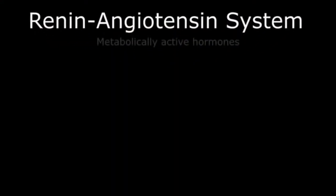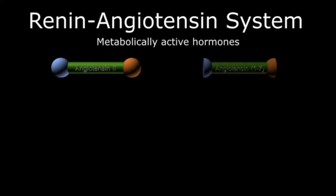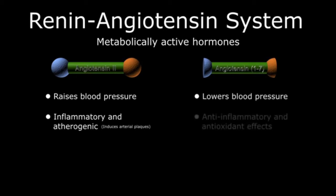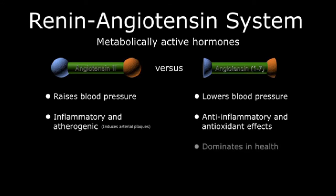The two dominant active hormone configurations in the renin-angiotensin system are angiotensin-2 and angiotensin-1-7. Angiotensin-2 raises blood pressure in response to limited renal blood flow and has inflammatory and atherogenic properties, causing plaques to form in vessels. Angiotensin-1-7, on the other hand, lowers blood pressure and has anti-inflammatory and antioxidant effects, reducing atherosclerotic disease. These two hormones are in direct competition, with the dominant species likely determined by the individual's baseline health status — in young, healthy, physically fit individuals, angiotensin-1-7 is dominant.